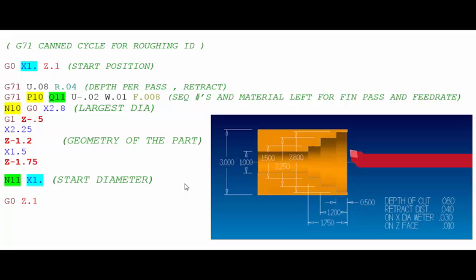So you can see the canned cycle for ID and OD roughing is almost identical other than the U for the excess material left on X is going to be minus on ID and plus on OD roughing. And we're working from the large to the small instead of small to large on OD roughing. So those are the two major differences that you want to pay attention to.